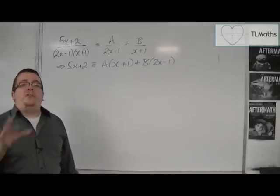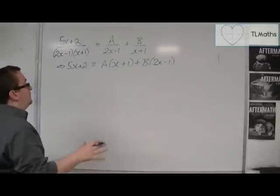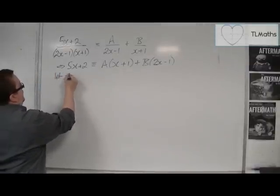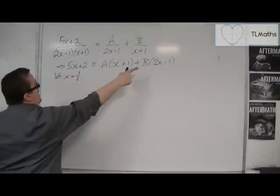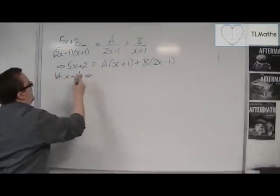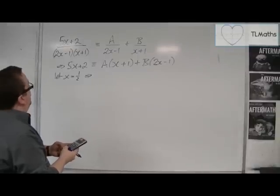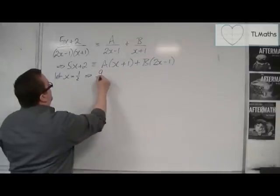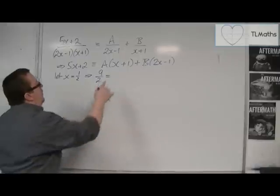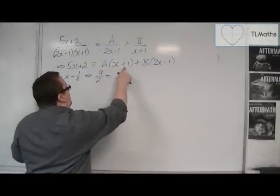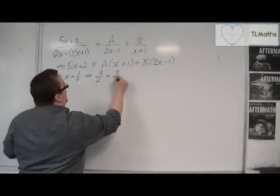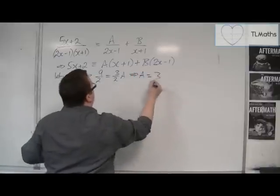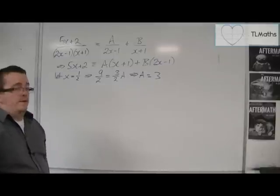I now want to choose numbers that are going to eliminate the brackets. So if I choose x as a half to eliminate the second bracket, I get 5 lots of a half plus 2, which gives me 9/2. And then we've got A times (1/2 + 1), so 3/2 times A. And of course that bracket is 0, so A would have to be 3 in order to multiply to get 9/2.